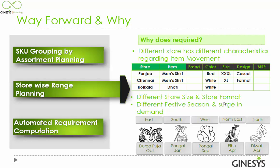Apart from this, different stores in the same location may differ in store size and format, so the quantity to be stored in a particular store would be different. Another factor is different festive seasons and surges in demand — for example, Durga Puja in eastern India is in October, while Pongal in southern India is in January. Different locations have different demand-surge characteristics, and these are the major factors that make store-wise range planning critical.